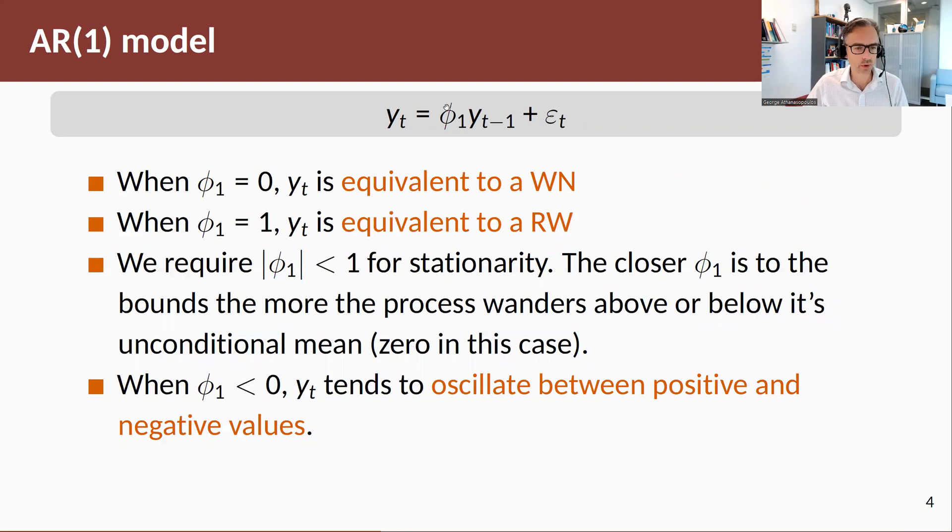Just a bit more on the AR1. Here's a general AR1 with an autoregressive coefficient phi_1. When phi_1 equals 0 or phi_1 equals 1, we have special cases at the extremes. If phi_1 equals 0, this is equivalent to white noise. If phi_1 equals 1, this is equal to a random walk.